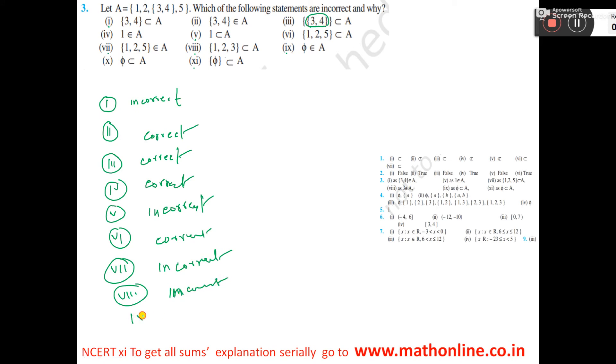Number 9: {5} element of A. Five is not there inside the second bracket. So, this is also incorrect.